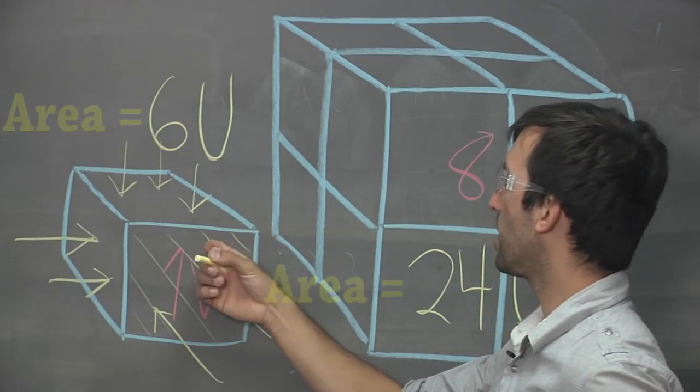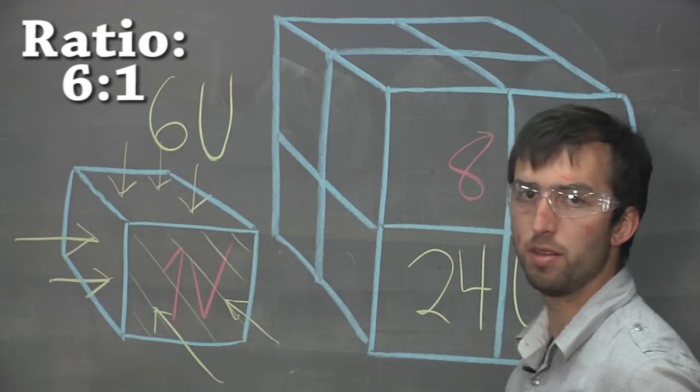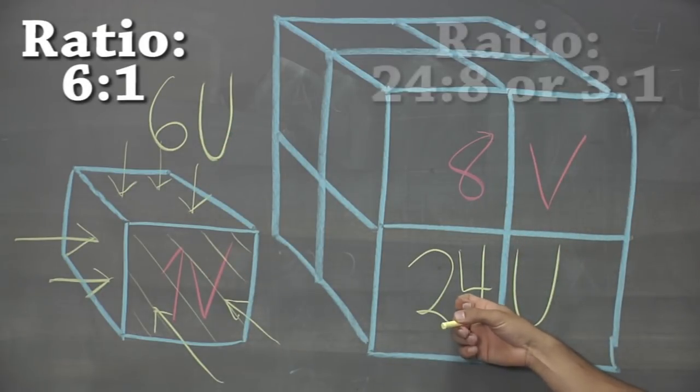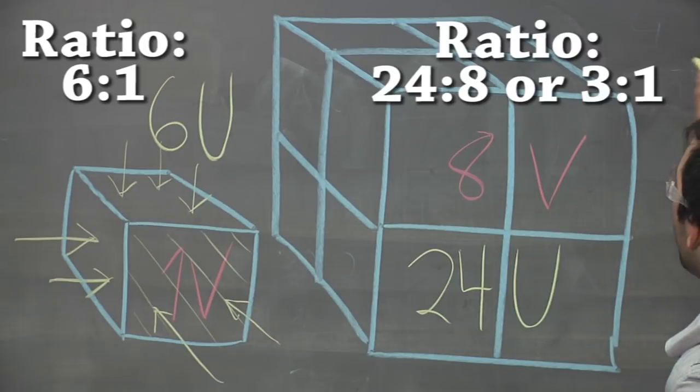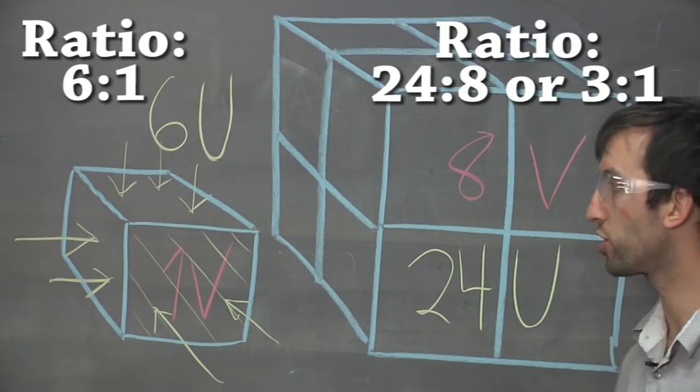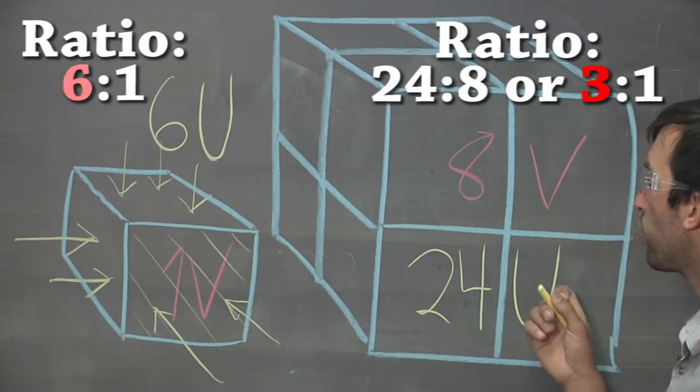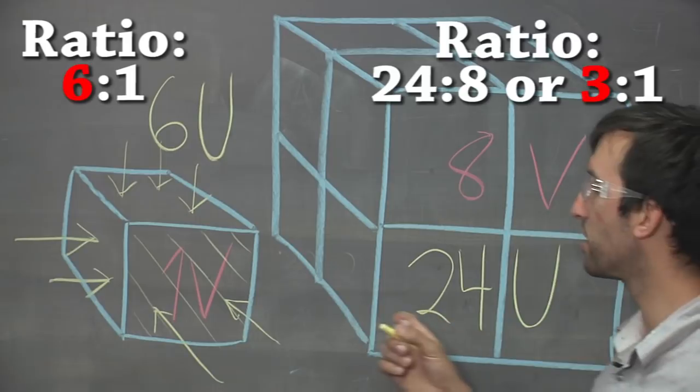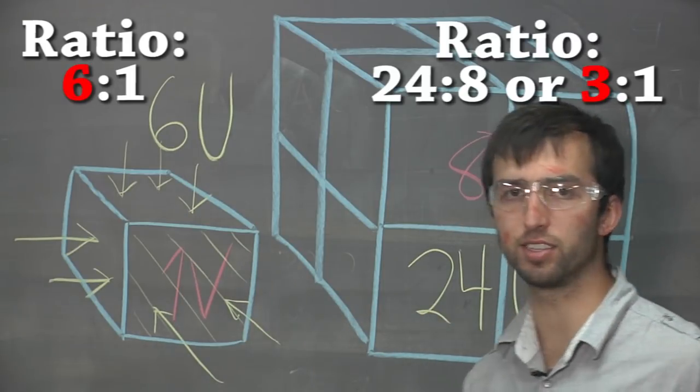The ratio here is six to one, but the ratio here is three to one. That means that this cube will have much less area available for a chemical reaction, and therefore this cube will take twice as long to react as this cube.